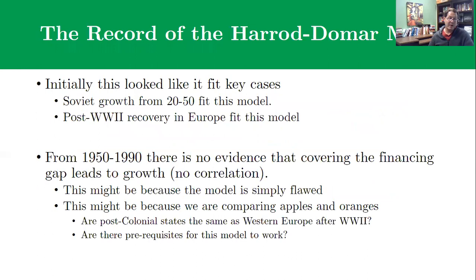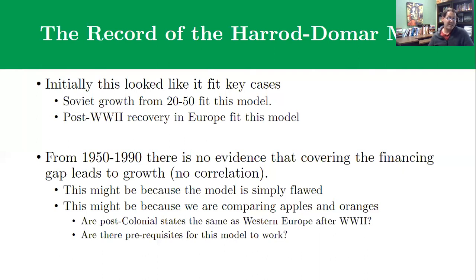We should talk about the record of the Harrod-Domar model and this approach to development — and to be perfectly honest, it's pretty spotty. The World Bank was founded with the mission of ending poverty globally, and poverty is still a problem almost 80 years later. Historically, the model seems to fit some key cases really well. Soviet industrialization from 1920 through about 1950 is an amazing feat — going from essentially no industry to the world's second largest industrial power — and they did it in part by dramatically increasing their stock of capital.